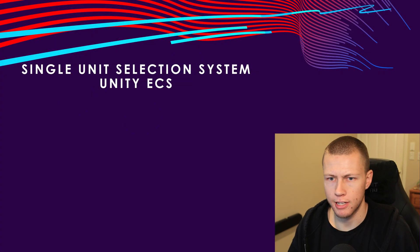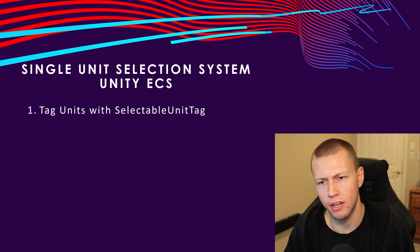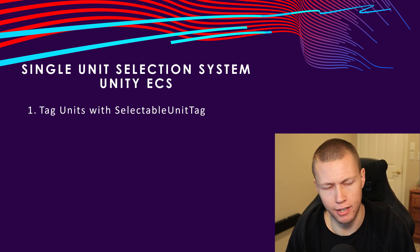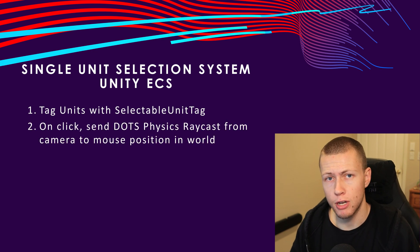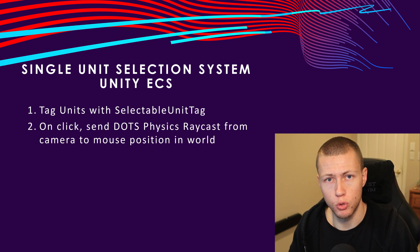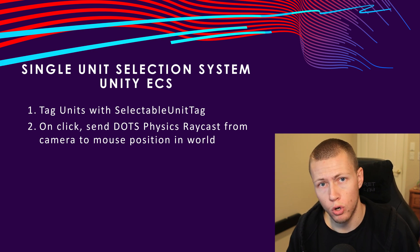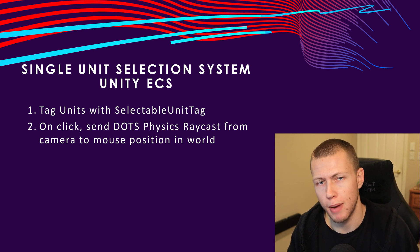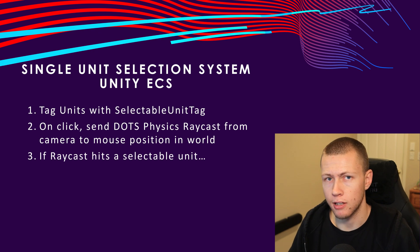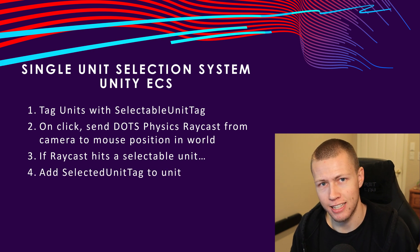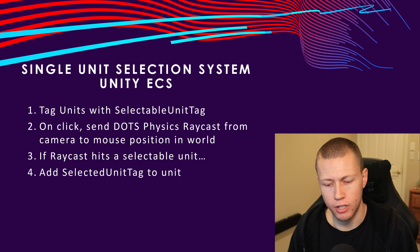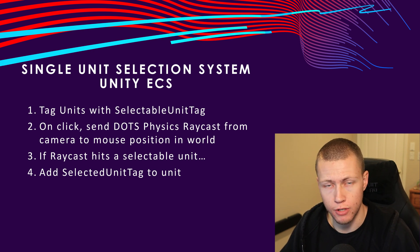So the basic idea of this selection system is that the units that can be selected are just going to have a selectable unit tag. A tag in Unity ECS is basically just an empty data component — I made a whole video on them if you want to learn more about how they work. Then when the player clicks the mouse button, we're going to be using the DOTS physics system to do a raycast from the camera to the world through the mouse position. If it hits a collider and that collider belongs to an entity with the selectable unit tag, we're basically going to add a selected tag to that entity.